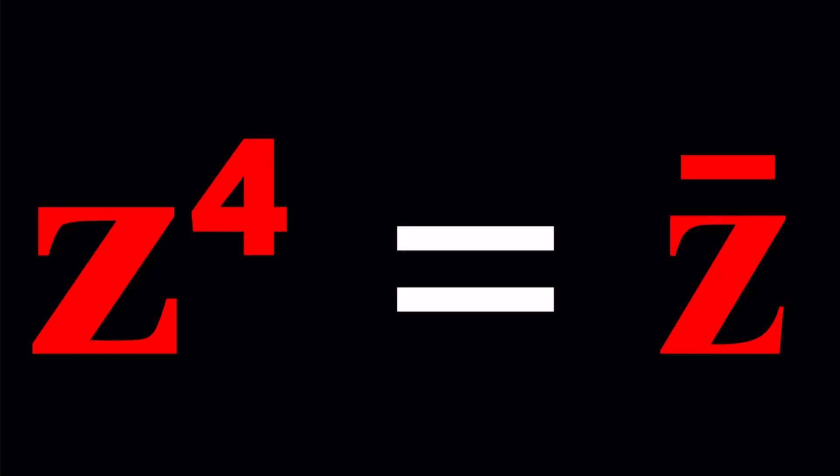Hello everyone, welcome to A plus BI. This channel is all about complex numbers and in this video we're going to be solving an interesting equation. We have z to the fourth power equals z bar which is the complex conjugate of z.